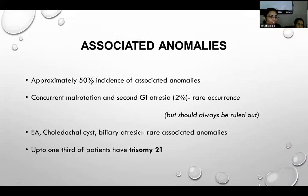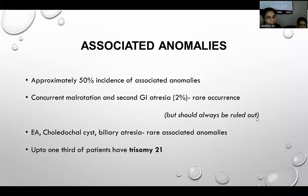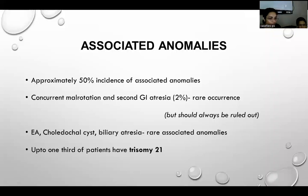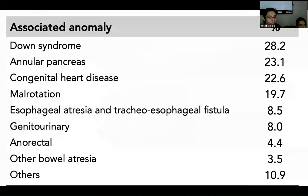Associated anomalies are found in almost 50% of duodenal atresia cases. Malrotation and secondary GI atresias are rare but should always be ruled out. Other associated anomalies include esophageal atresia, choledochal cysts, and biliary atresia. Up to one third of patients with duodenal atresia are associated with trisomy 21, i.e., Down syndrome.